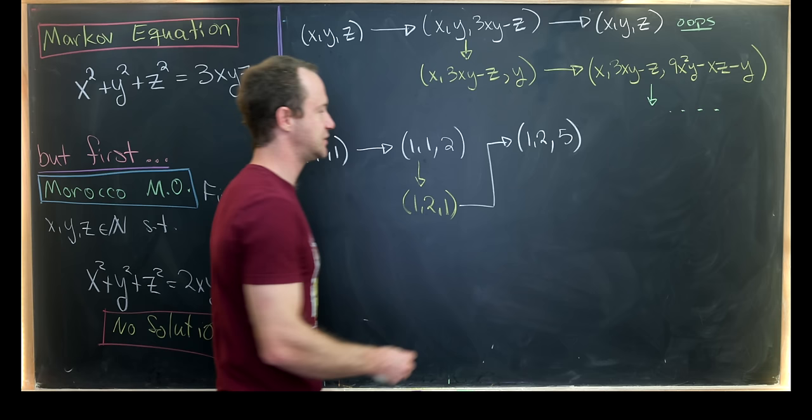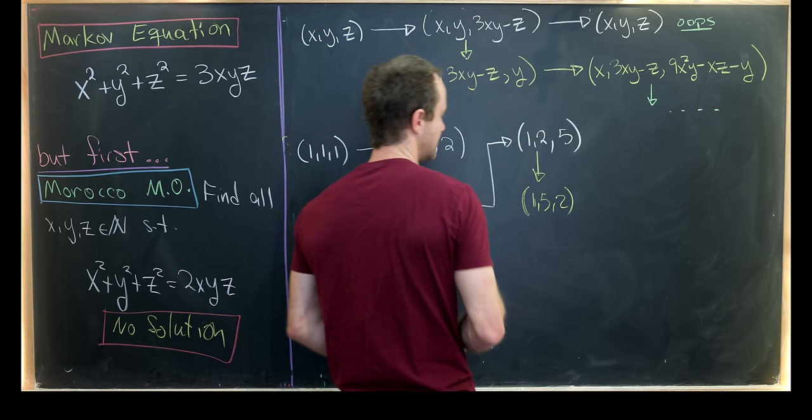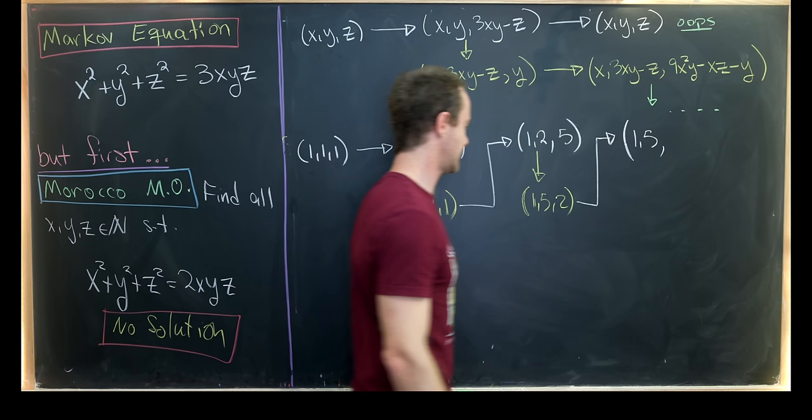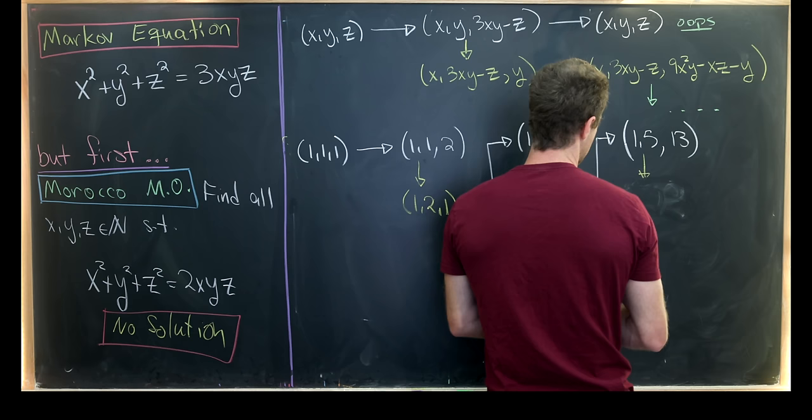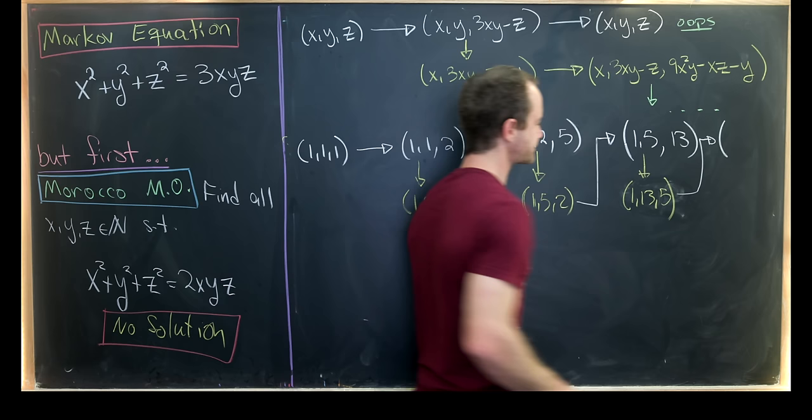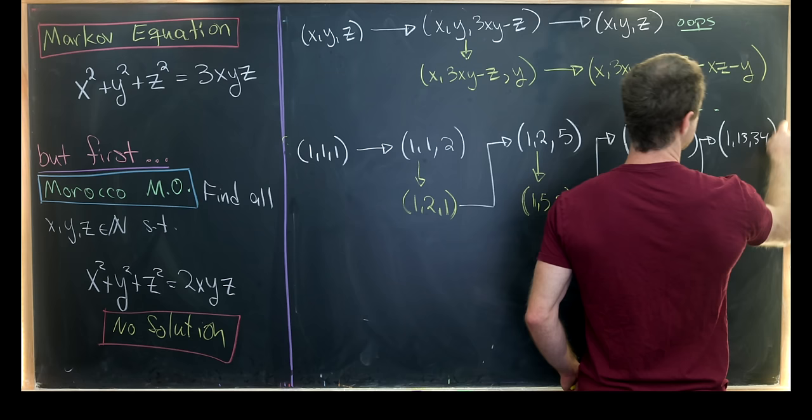So the solution chain looks like this: (1, 1, 1), (1, 1, 2), (1, 2, 5) and now let's do it again. So we'll do a shadow switch here of (1, 5, 2) and then we'll apply our claim to that. So we'll have (1, 5) and then we need 3xy - z so that's going to be 15 minus 2, that will be 13. And then let's maybe do one more for good measure. So we'll do our shadow switch that'll switch this to (1, 13, 5) and then applying our claim will give us something like (1, 13, 34).